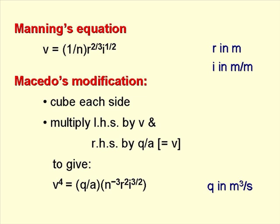So first we have Manning's equation: V equals 1 over N, times R to the 2/3, times I to the 1/2, where R is in metres and I is in metres per metre. A Brazilian sewerage engineer, Macedo, modified Manning's equation by cubing each side, then multiplying the left-hand side by V and the right-hand side by Q over A — which equals V — obtaining V to the power 4 equals Q over A, times N to the minus 3, times R squared, times I to the power 3/2.